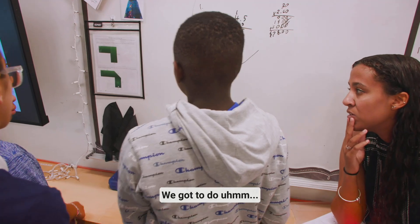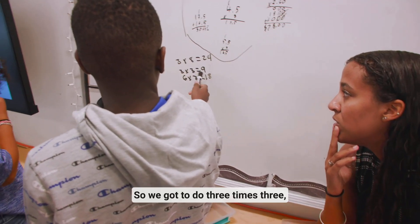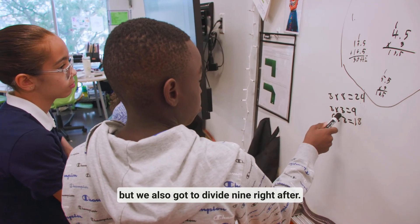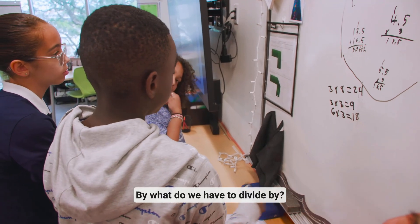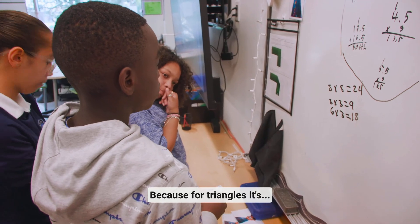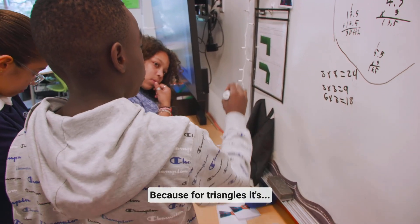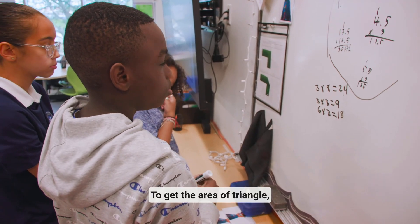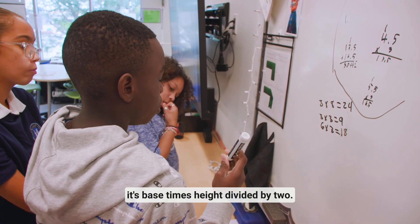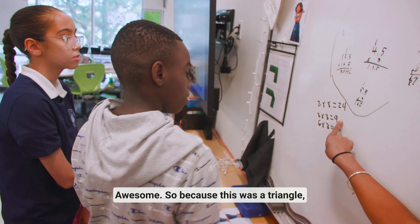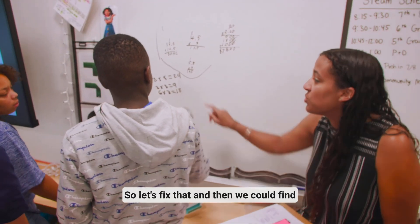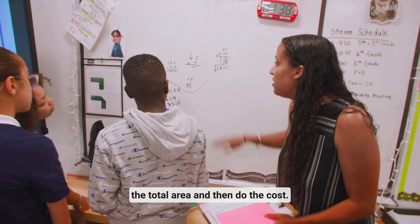Talk to your group first before we fix it. So we've got to do 3 times 3, but we also have to divide nine by two. Why do we have to divide by two? Because to get the area of a triangle, it's base times height divided by two. Awesome — so because this was a triangle, we got the nine, and now we have to divide that by two. I love that you fixed that. And then we can find the total area and then do the cost.